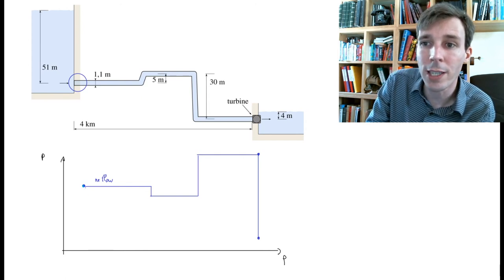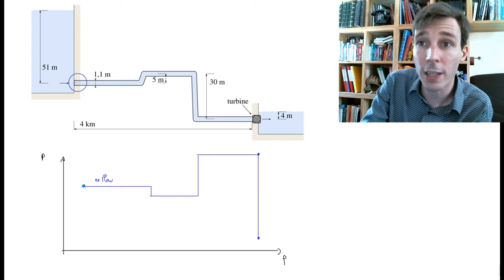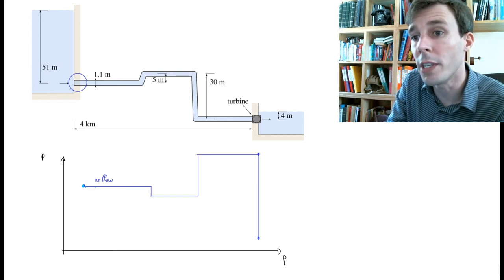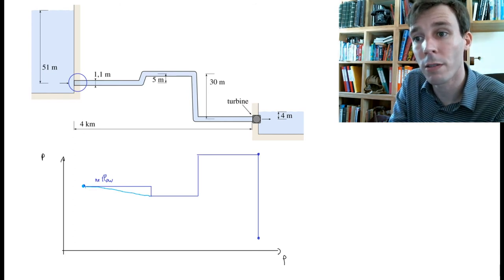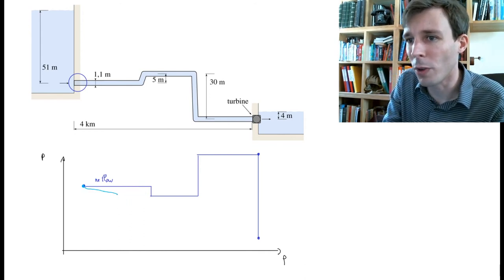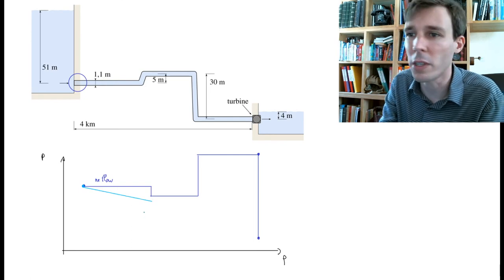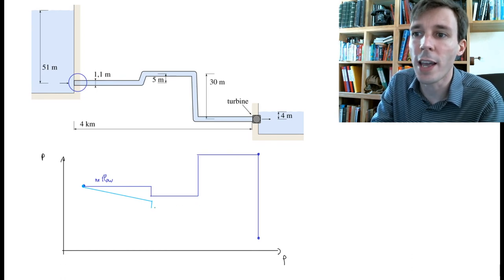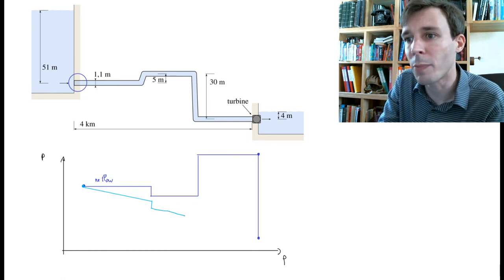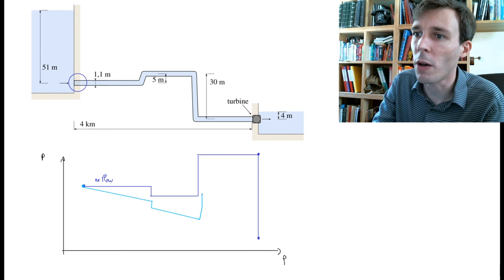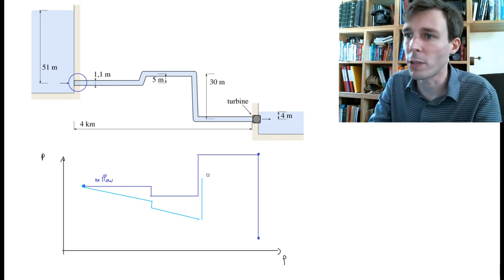I draw a second curve which starts at the same point because we are here again at 51 meters below the surface. But now as I go along the pipe, my pressure will decrease progressively and linearly with distance. Then we go down again inside the pipe, and at this point here, instead of a horizontal line, I have a line that's parallel. Then I jump up by the same amount.